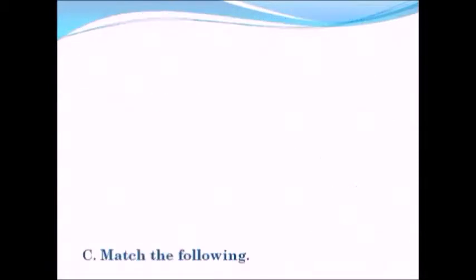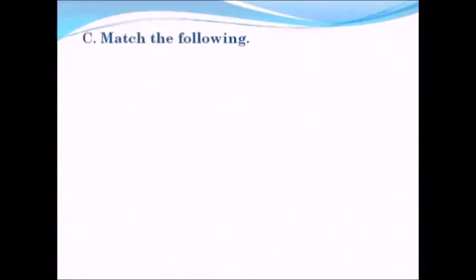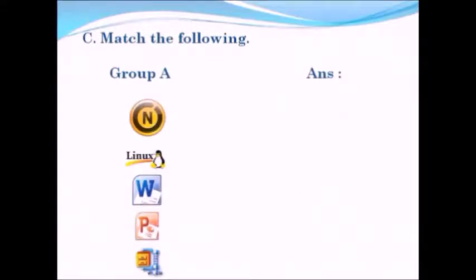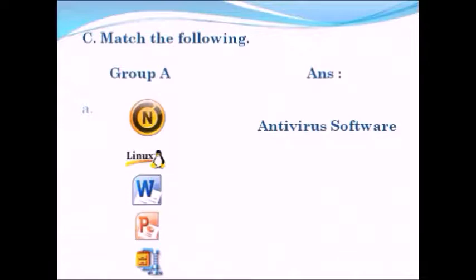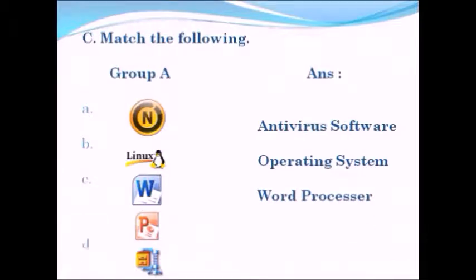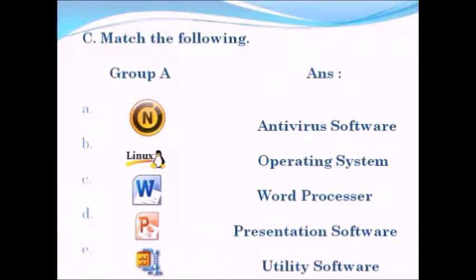Next is question number three, which involves matching or categorizing items. The items in Group A are: antivirus software, operating system, word processor, presentation software, and utility software.